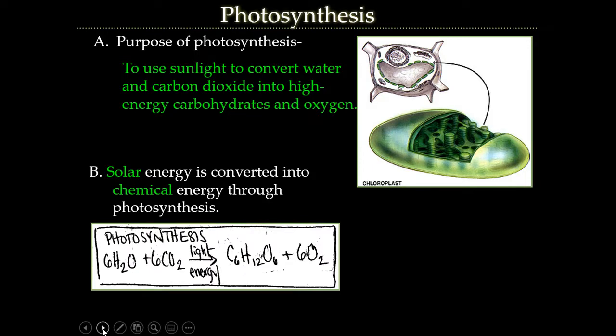This is the general equation of photosynthesis. We have water plus carbon dioxide with the help of light energy or sunlight yields glucose and oxygen gas.